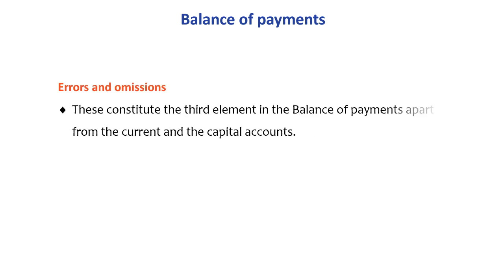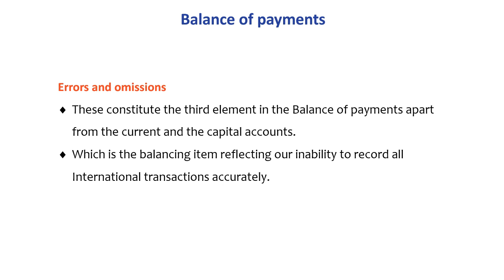Errors and omissions constitute the third element in the balance of payments, apart from the current and capital accounts. This is the balancing item reflecting our inability to record all international transactions accurately. When some international transactions are omitted or not recorded properly, errors and omissions come into play.